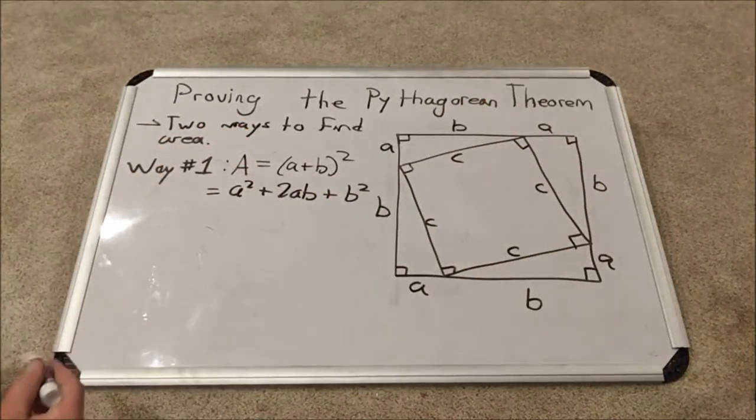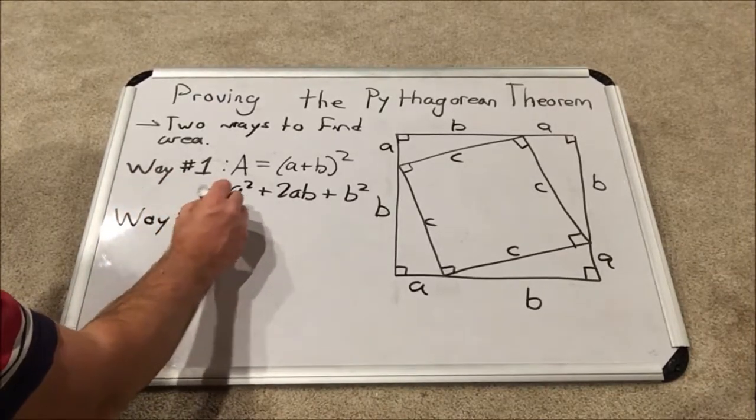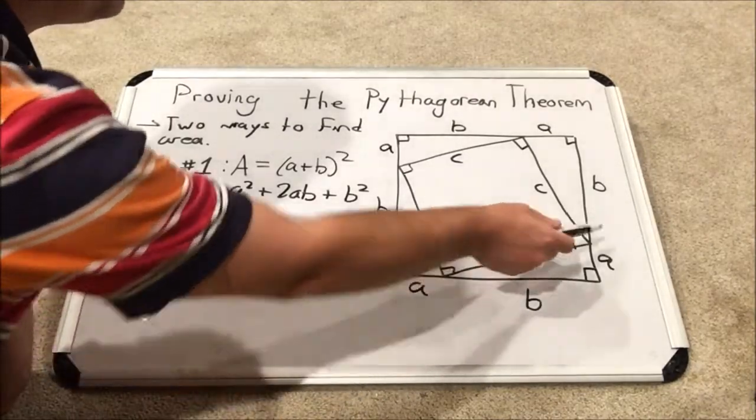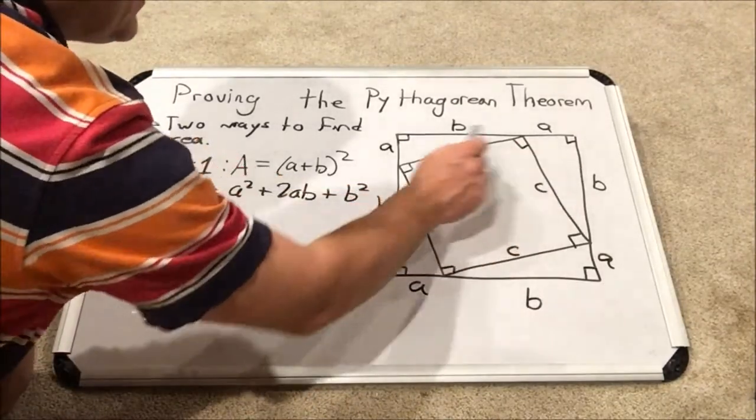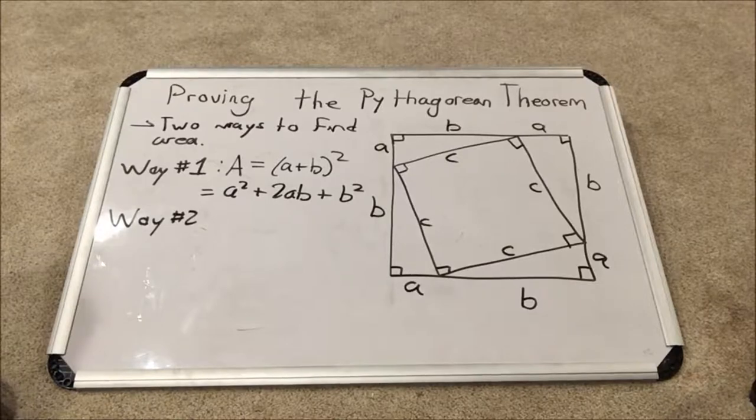Now the other way, it's a little bit more complicated, but it is totally equivalent. We are going to add the inner square area to the area of each of these identical right triangles. So, let's write out this formula for way number two.